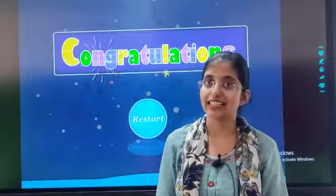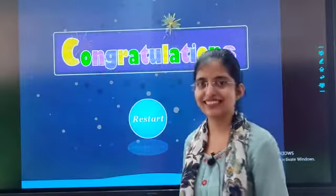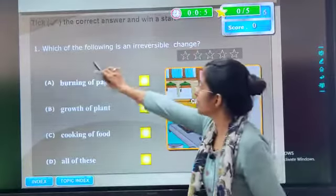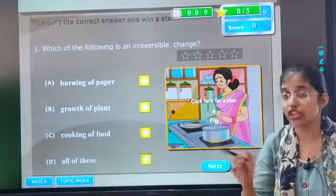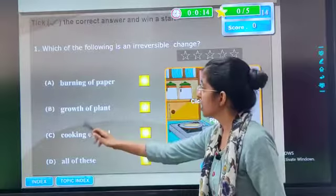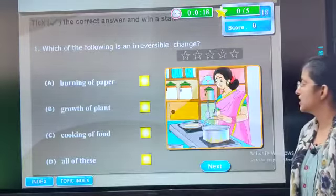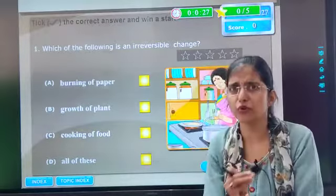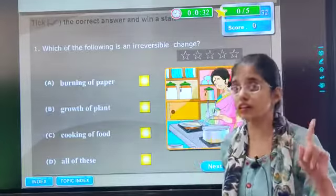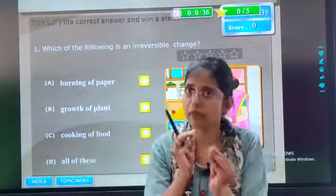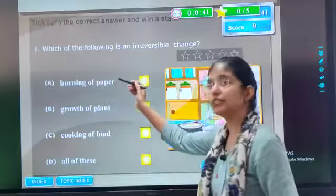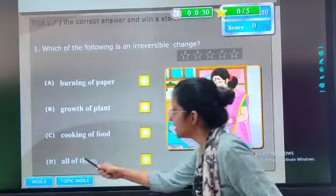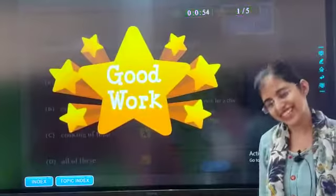We have completed our first exercise. Now it is time for our second exercise. Take the correct answer and win a star. And see. Which of the following is an irreversible change? Burning of paper. Growth of plants. Cooking of food. Let's see. So all these are irreversible changes. Yes. Good work.